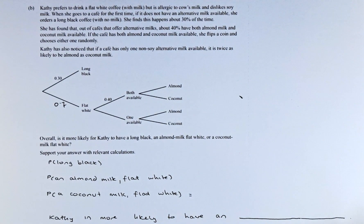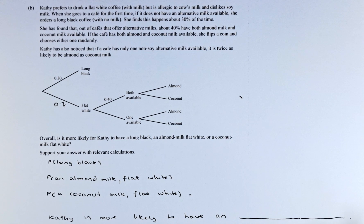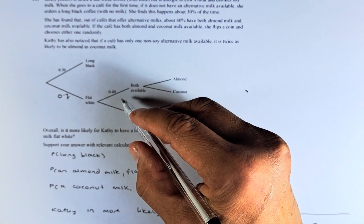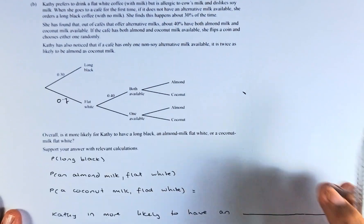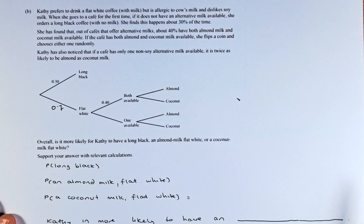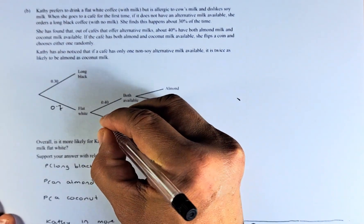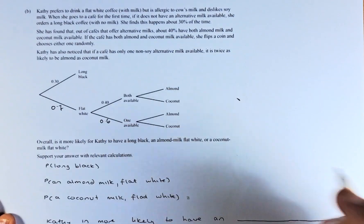She has found that out of the cafes that offer alternative milk, about 40% have both almond and coconut milk. So 40% have both available, and 60% have only one available. Again, these two must add up to 1.